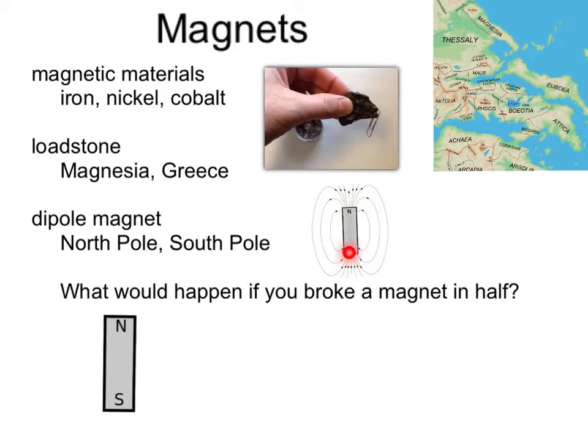But did you ever wonder, what would happen if you broke a magnet in half? Well, if we broke this dipole magnet in half, we would get two smaller magnets, each with a north pole and south pole, as shown.